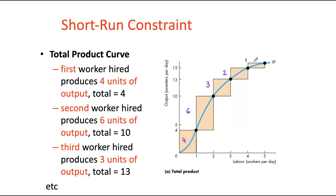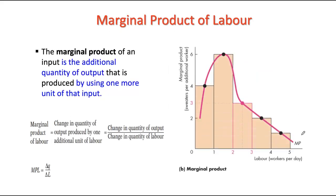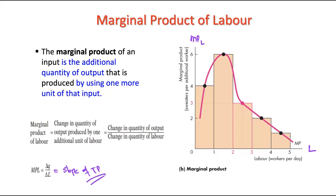Let's draw the marginal product curve on a separate diagram. With labor on the x-axis and marginal product of labor on the y-axis, we can see that as we hire the first worker marginal product is increasing, reaches a maximum, and then after the second worker each additional worker gives us less than the previous one — so the marginal product curve starts to decrease. It is what we call a maximum function, reflecting the slope of our total product curve. The point at which marginal product is maximum is called our point of diminishing marginal productivity — in our case, when the firm hires the second worker.